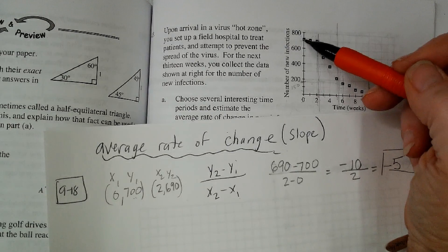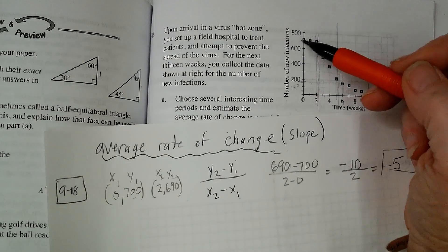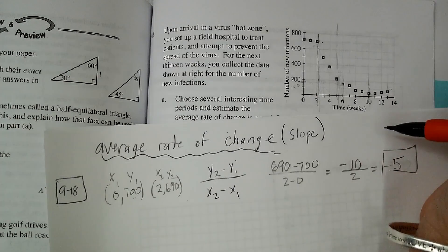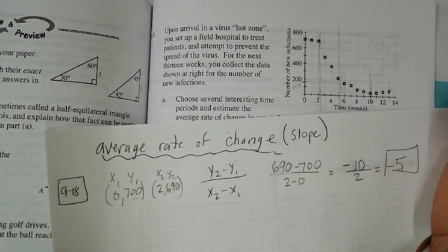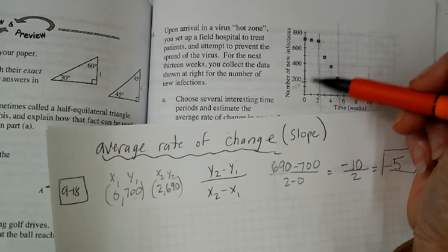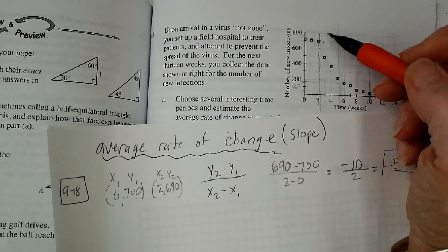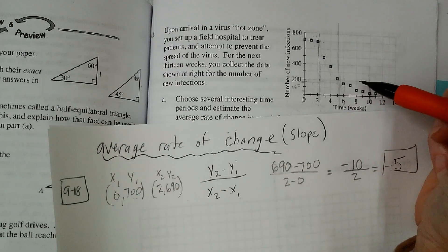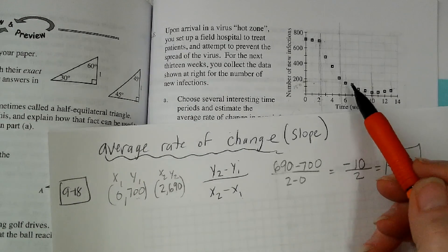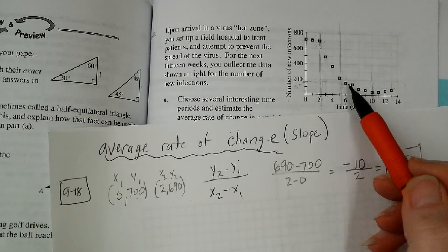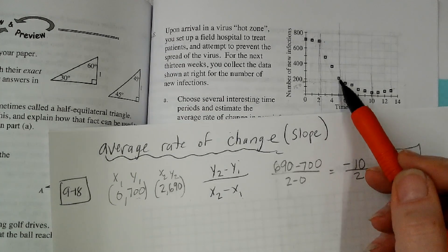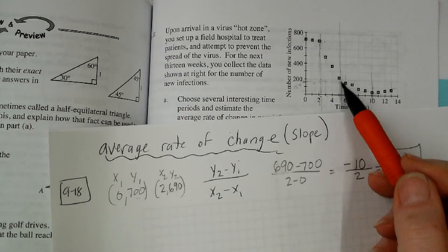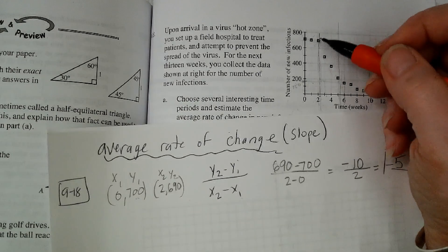And I got about negative 5. So they're not really slowing down the virus that much. It's only slowing down by about 5 cases per week. They're getting 5 fewer new infections per week right here. I see another, I see a real big drop. It starts to kind of level out right in here. So I'm going to just choose from 2 to maybe 5. I think that would be nice. So that's another interval.